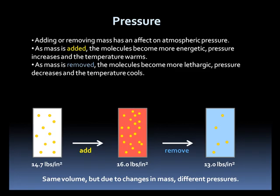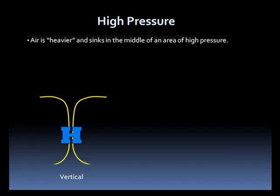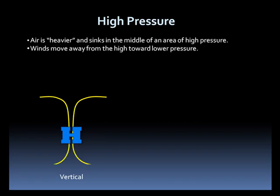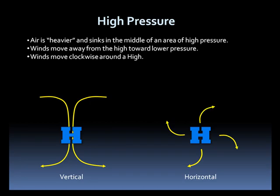Now, let's look at high pressure and how it relates to weather. High pressure, represented on weather maps by a blue H, works in the vertical: air is heavier and sinks in the middle of high pressure. As a result, air moves out from the center of the high. In the horizontal, we see air moving away from the high center. However, the air doesn't move straight out — it actually curves, turning to the right, so the circulation around an area of high pressure is clockwise.